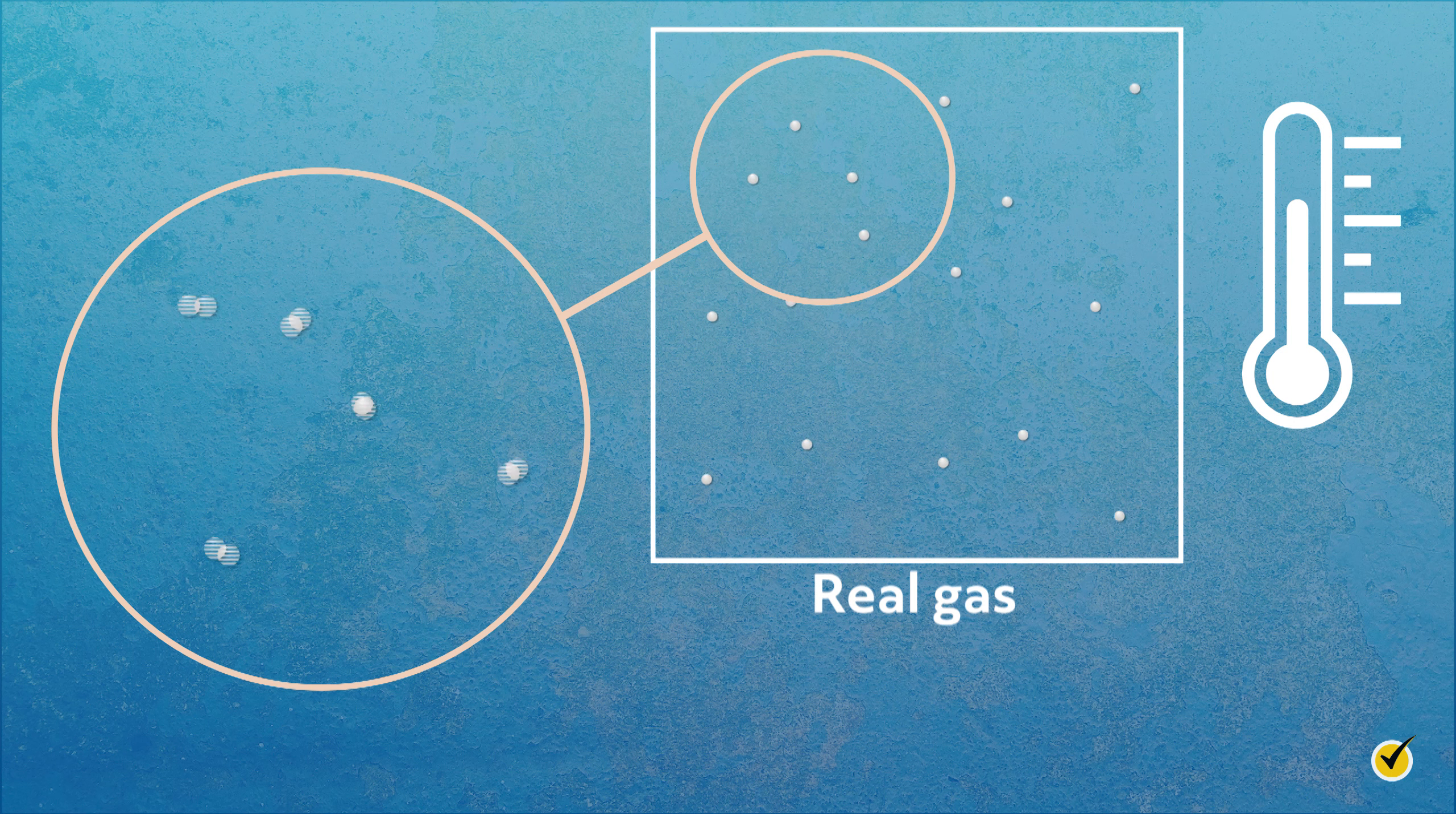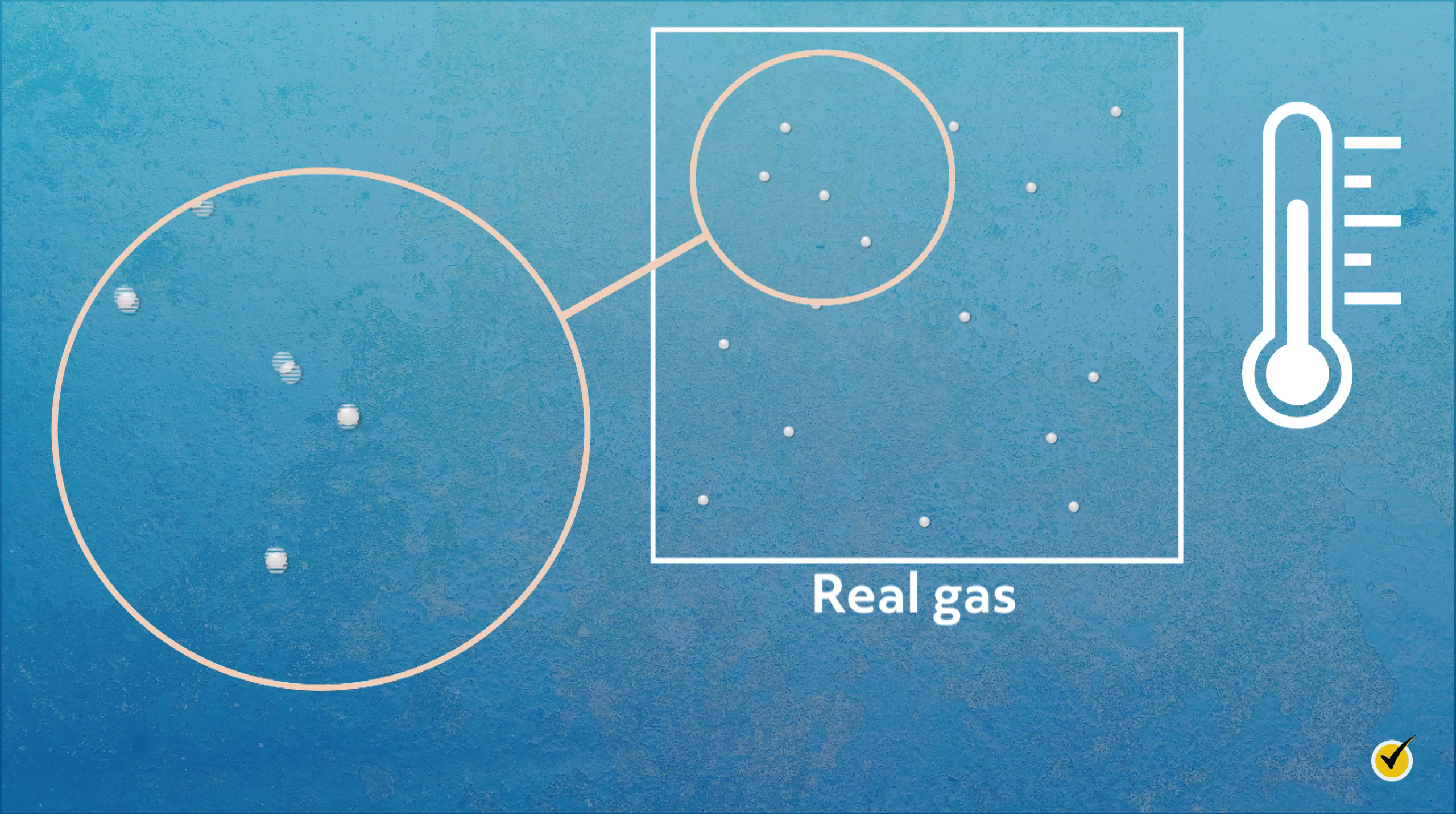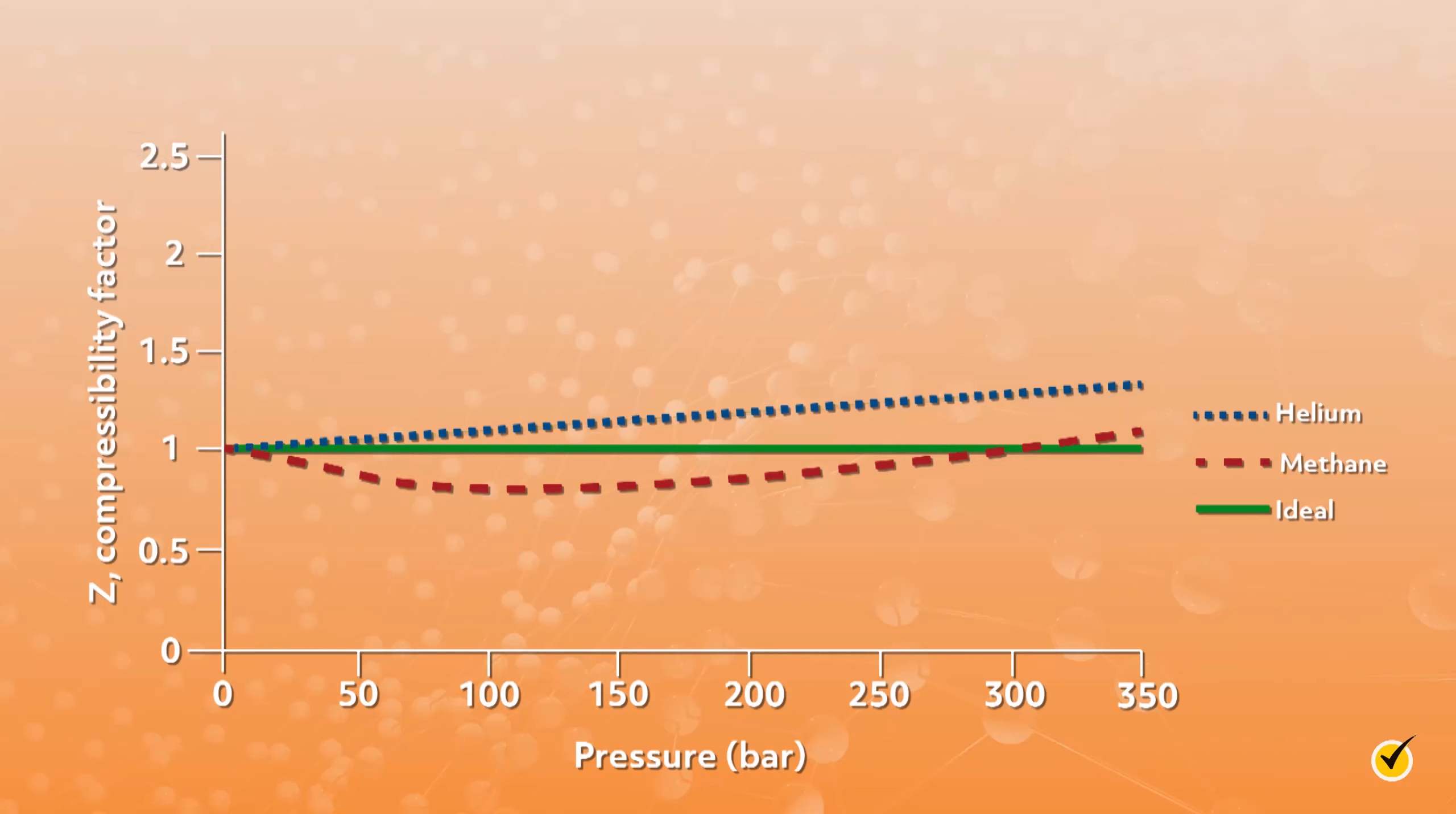To see this all visually, we can consider a few graphs, which are commonly used to contrast the behavior of real and ideal gases. In the first graph here, we have PV divided by NRT, denoted as Z, the compressibility factor, plotted against the pressure of the system for helium, methane, and an ideal gas at 293 Kelvin, your typical room temperature.